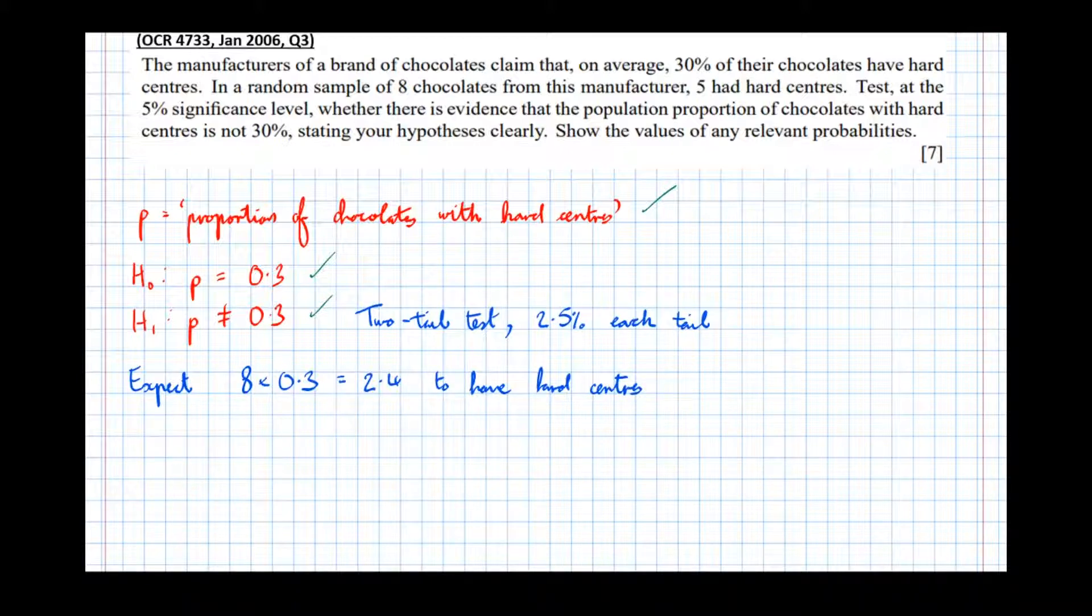So we can see that our observed value of 5, which is here, is an increase from the expected 2.4. So now we'll test the right-hand tail. So the probability that X is greater than or equal to 5—and we're doing that to see how much probability is to the right of 5—equals 1 minus the probability X is less than or equal to 4.